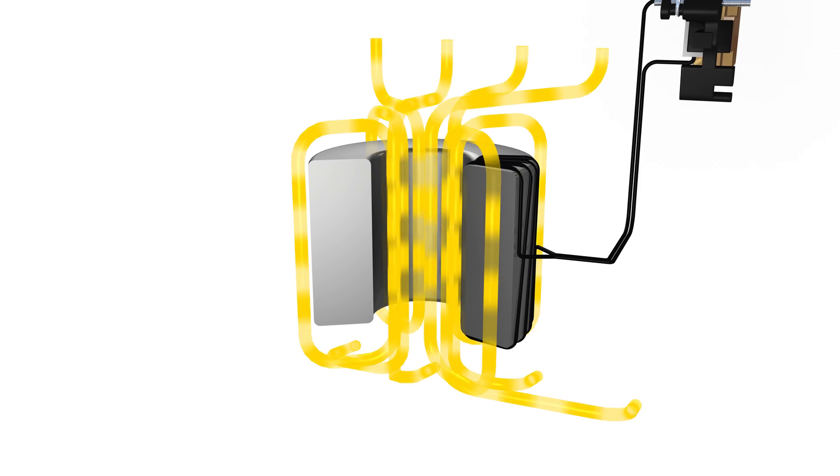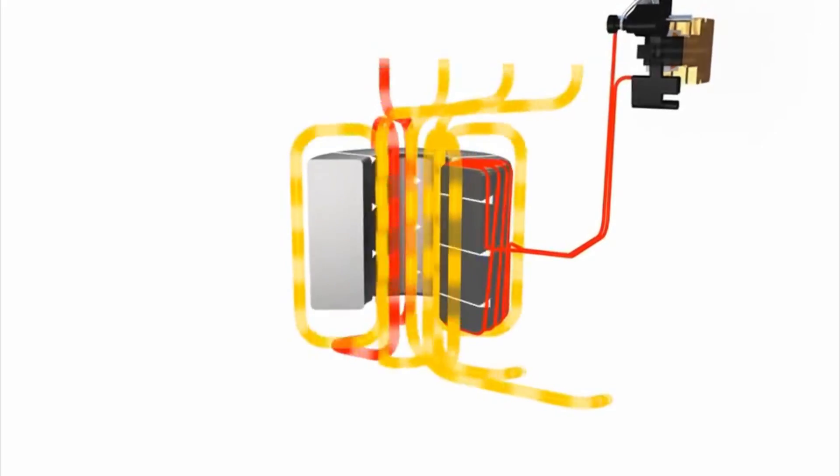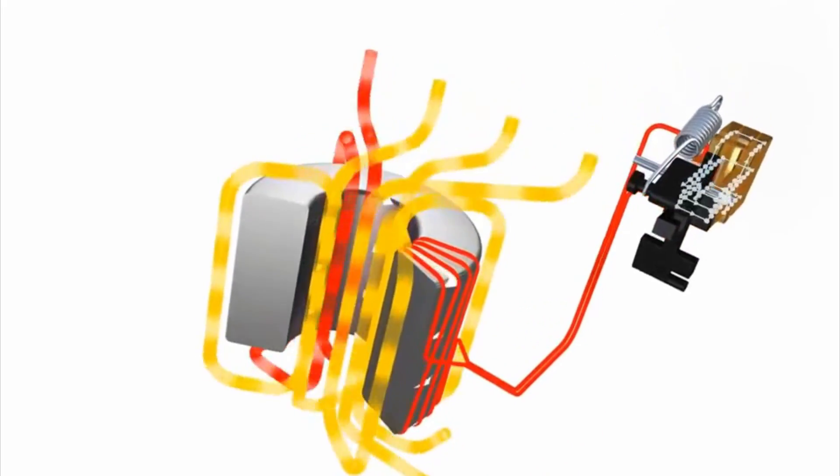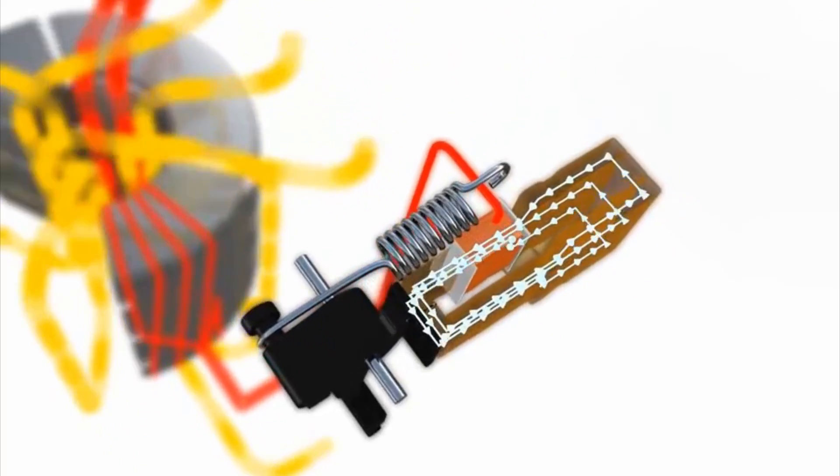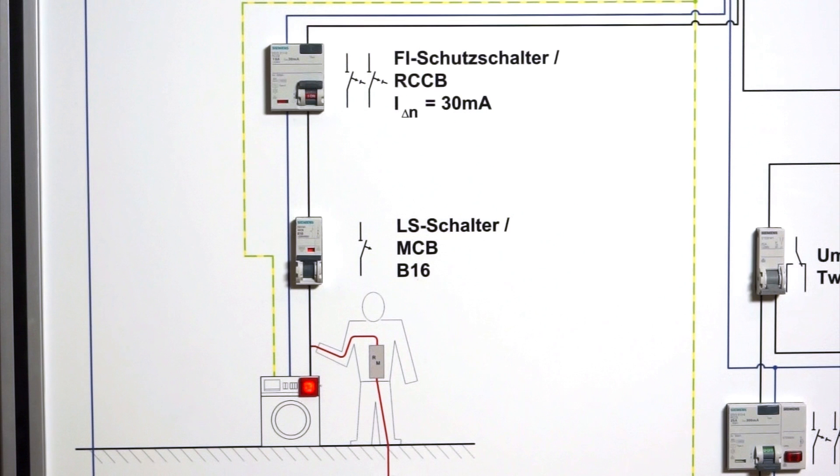A fault current flowing due to an insulation fault will generate a magnetic flux in the transformer, which will in turn induce a voltage in the secondary winding. This mechanism acts upon the holding magnet relay and releases the RCCB in case of limit value exceedance.